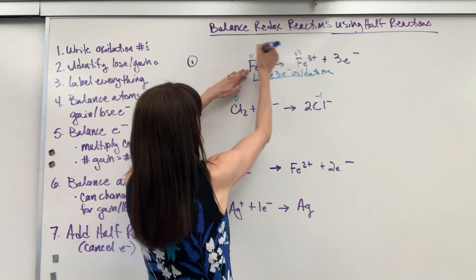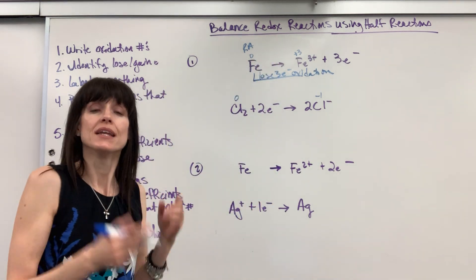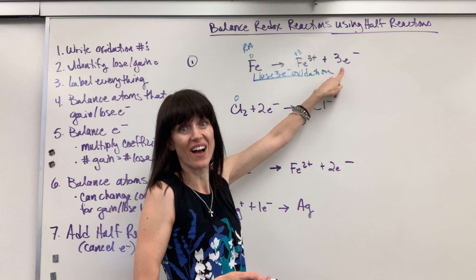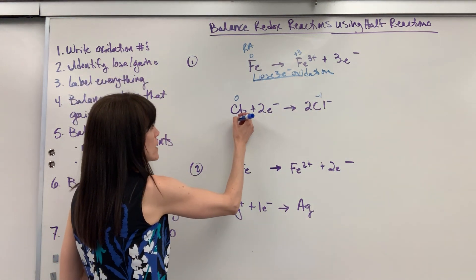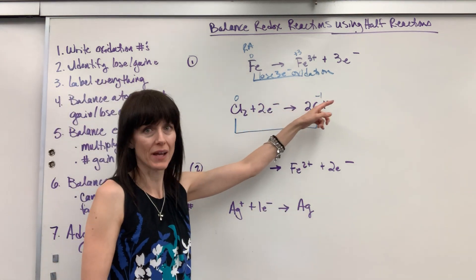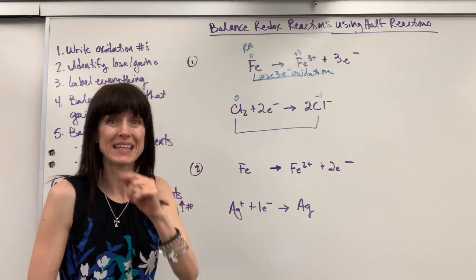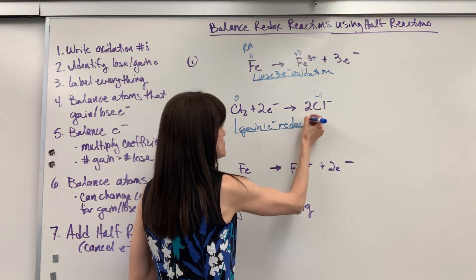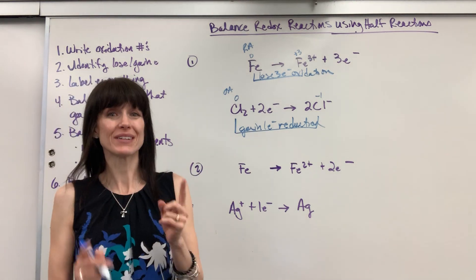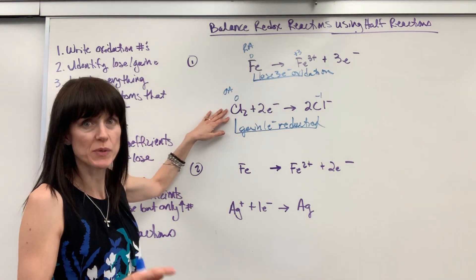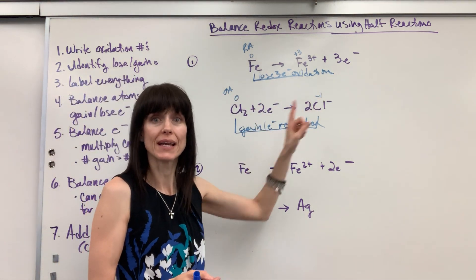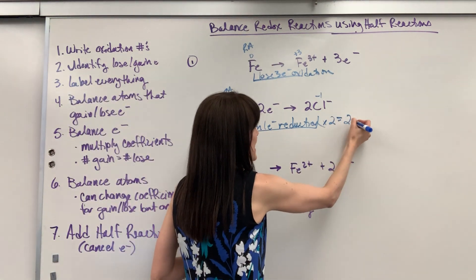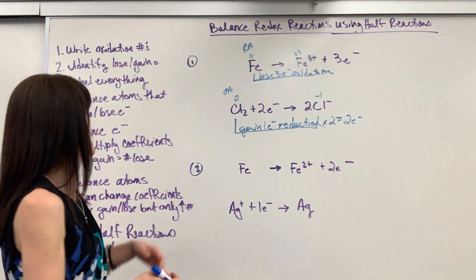Whatever is oxidized is the reducing agent. Notice how this is written for half reactions — iron has three electrons lost, so we write three electrons on the product side. For chlorine, going from zero to minus one means gaining one electron — that's GER, gain electrons reduction. So chlorine is reduction. Now notice there are two chlorines; we write oxidation numbers for one atom, so one chlorine gains one electron, but with two chlorines we multiply by two, gaining a total of two electrons.